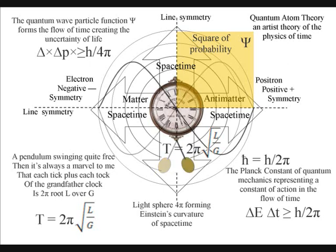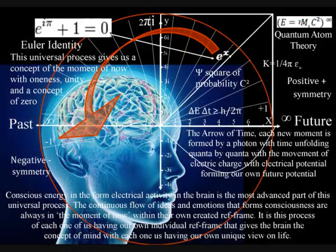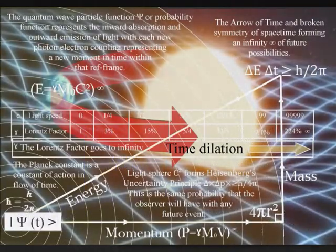Because the photon is also the carrier of the electromagnetic force, electrical potential is the same potential we have with any future event, within our own reference frame, that we can interact with, turning the possible into the actual.